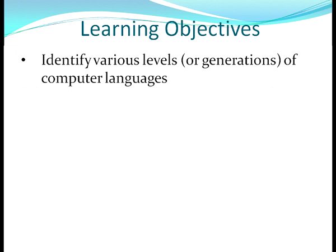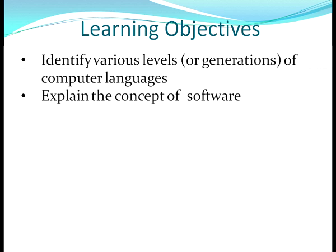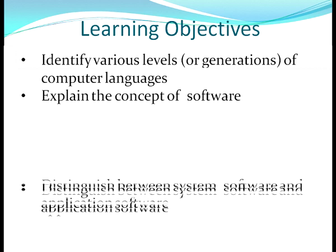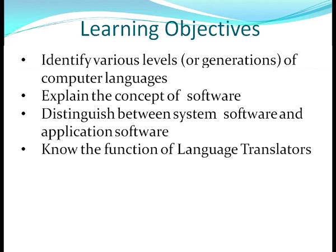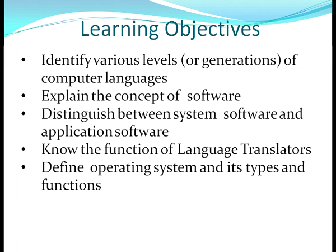Computer software — you must all have been very familiar with this term. A software is a set of programs. In this session we will be discussing about various types of software, various levels or generations of computer languages, the concept of software, the distinction between system software and application software, and the function of language translators — compilers and interpreters. We will also be defining the operating system and its types and functions.